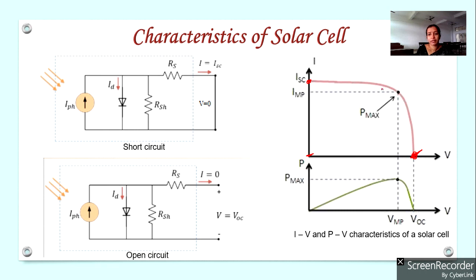The two extreme points are: the point corresponding to 0 voltage and current ISC, and the point corresponding to 0 current and voltage VOC. The remaining part of the curve resembles the forward-biased characteristics of an ordinary P-N junction diode. This completes the current versus voltage characteristic of a solar cell.